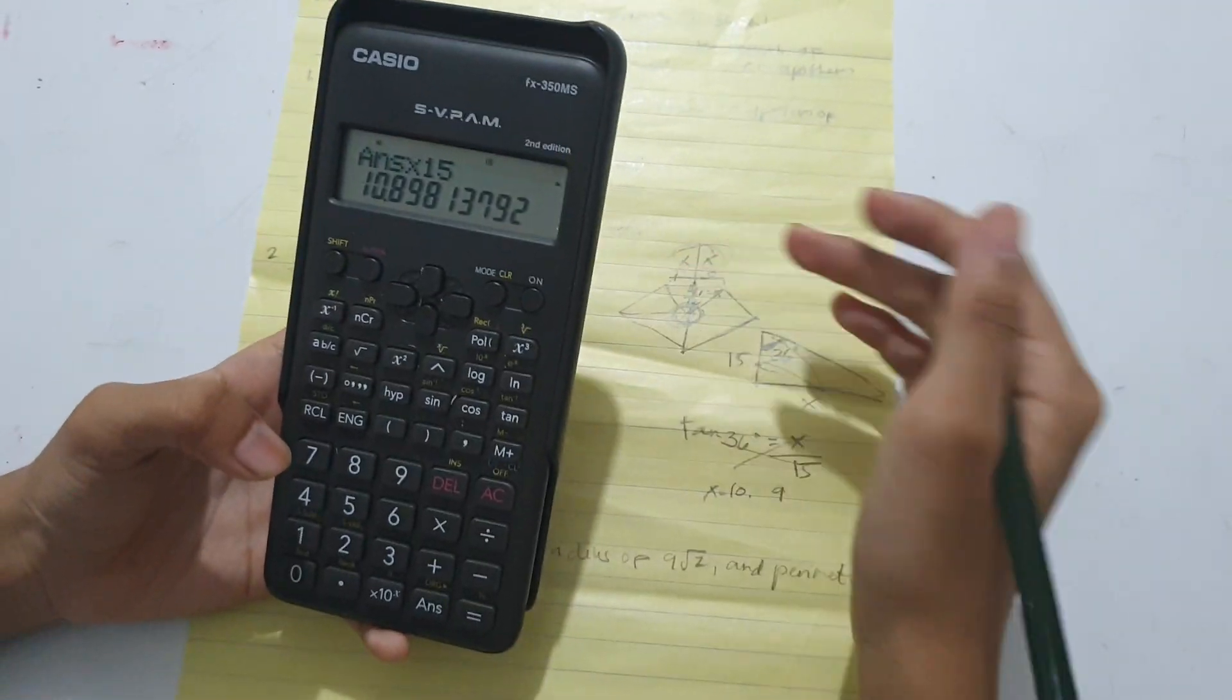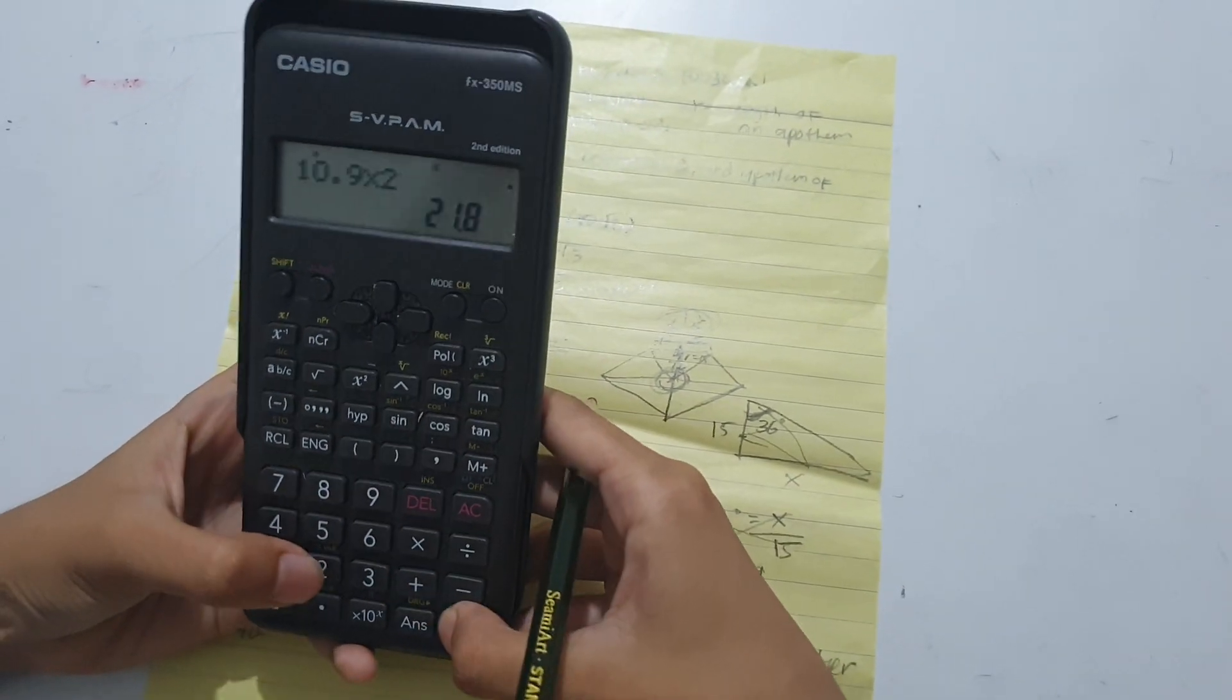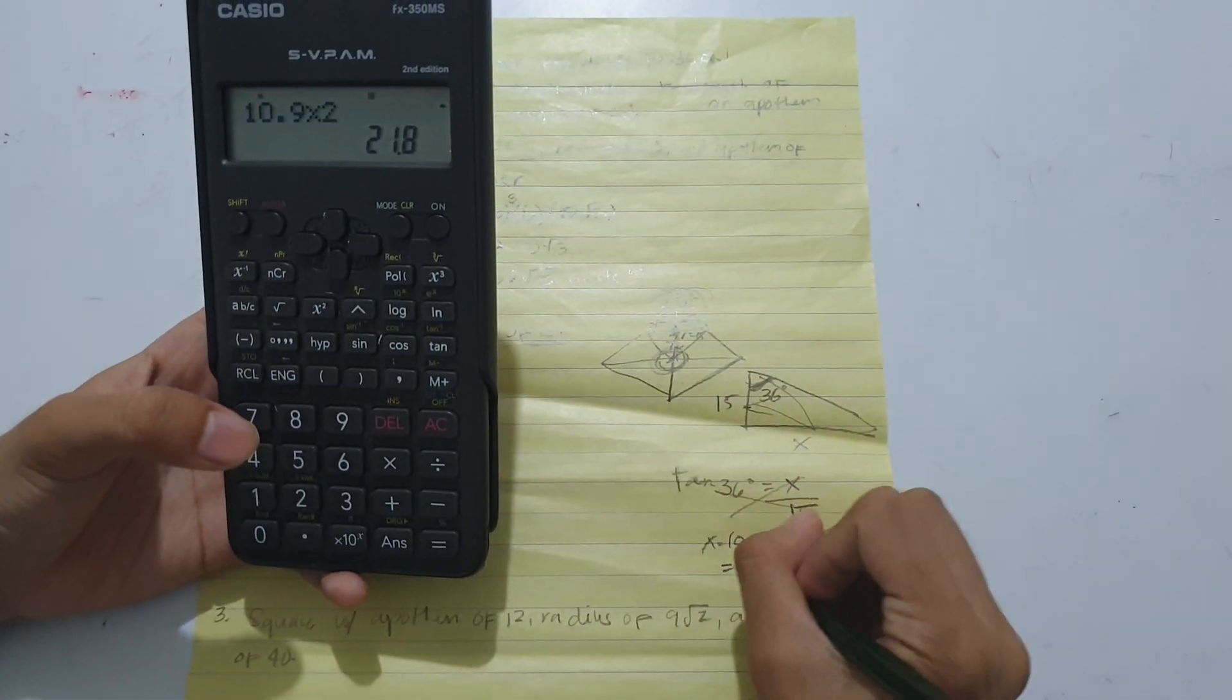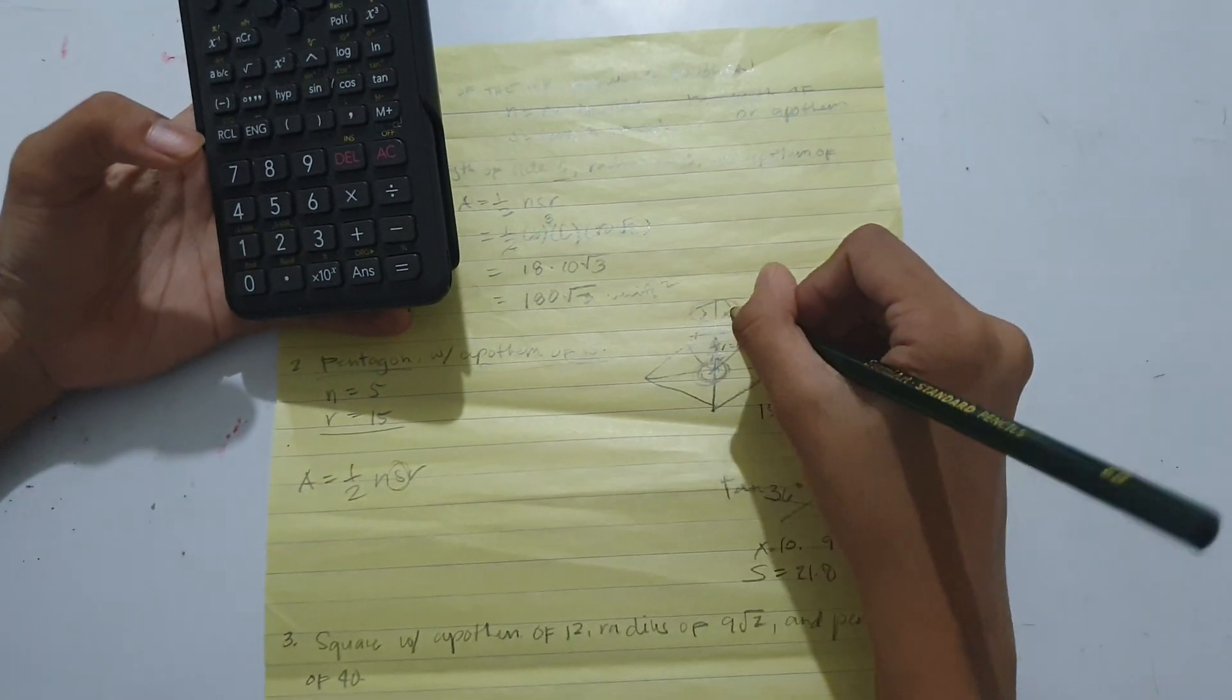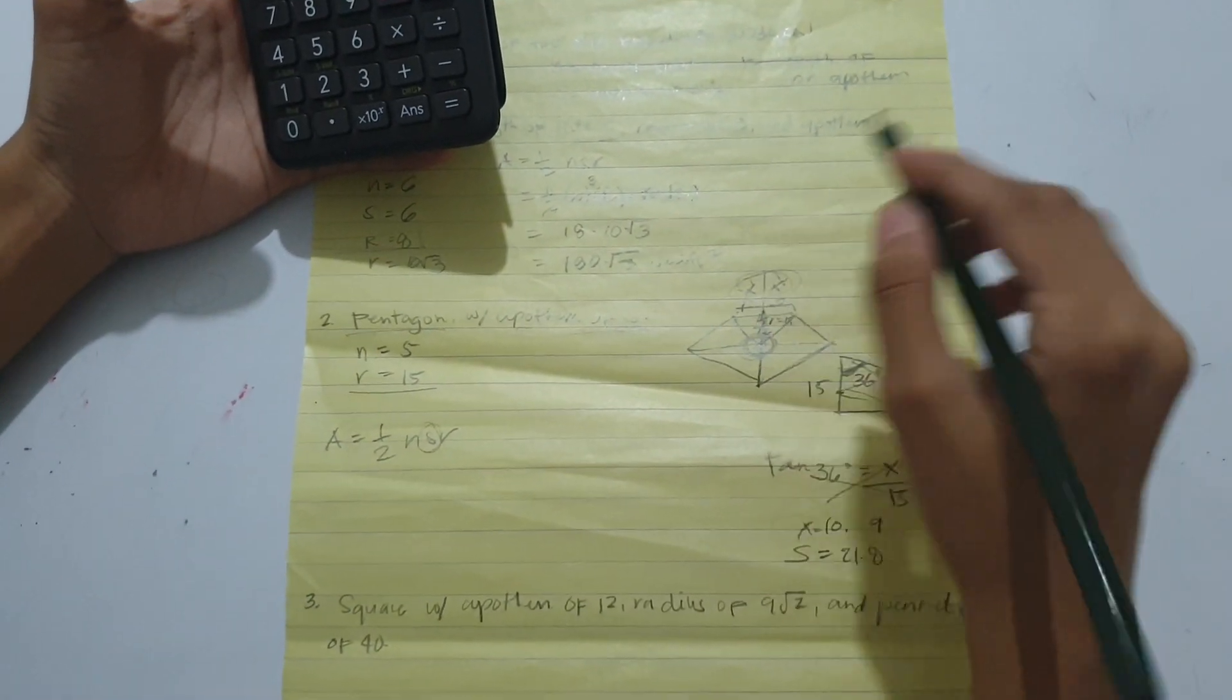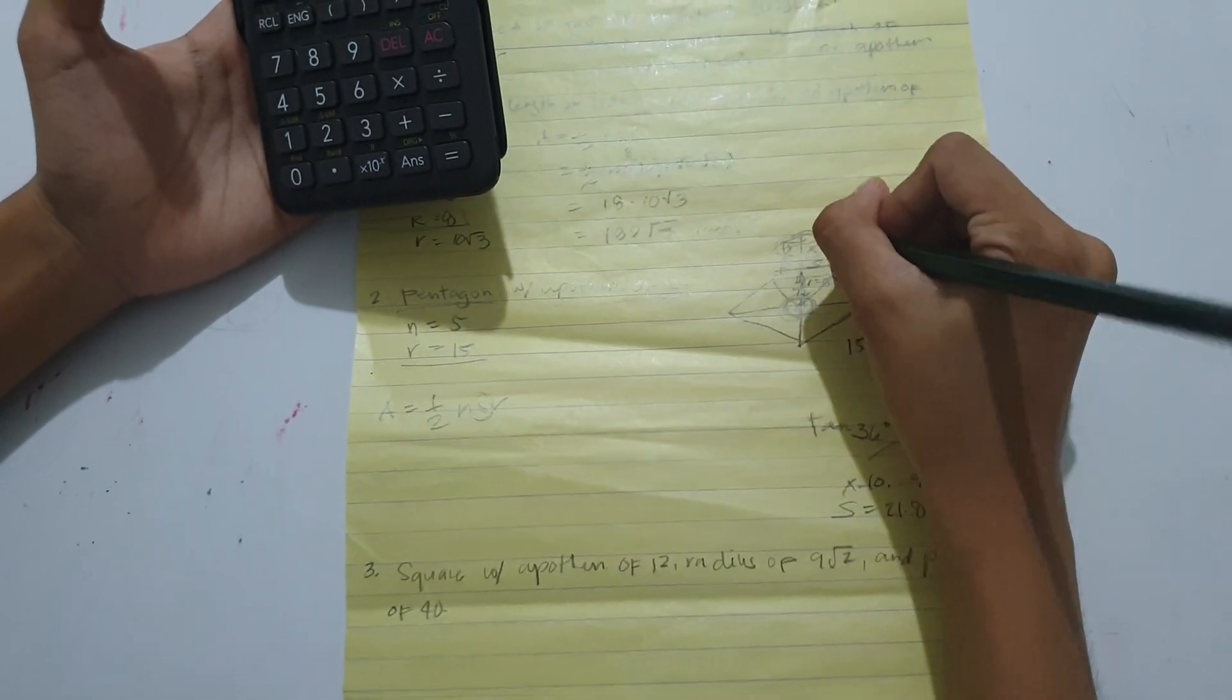So 10.9 times 2 is 21.8, since it should be multiplied by 2 because we divided them before. Now we got S, which is 21.8.